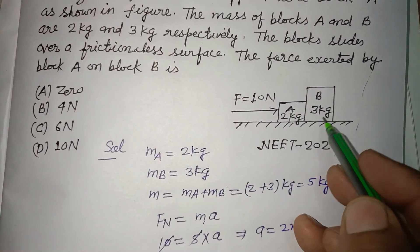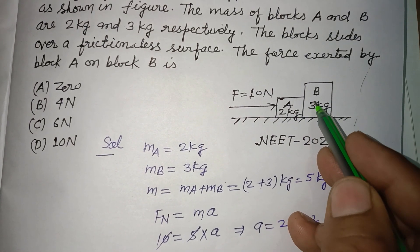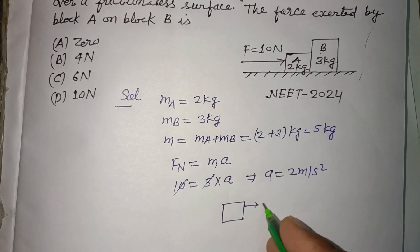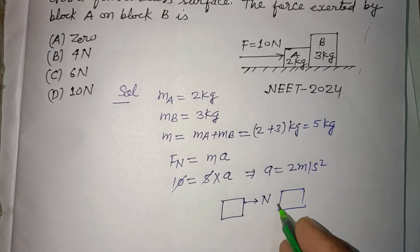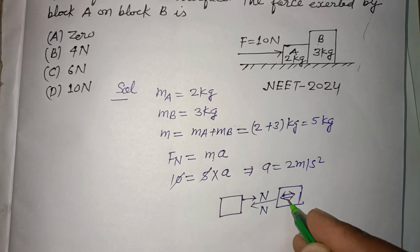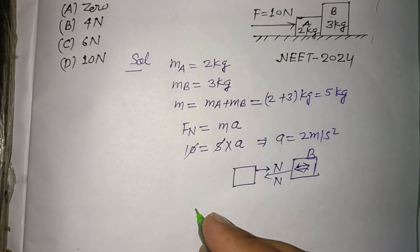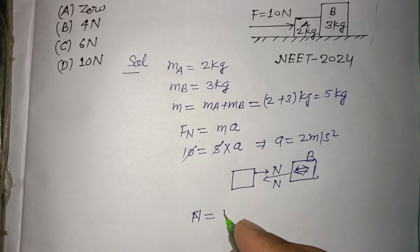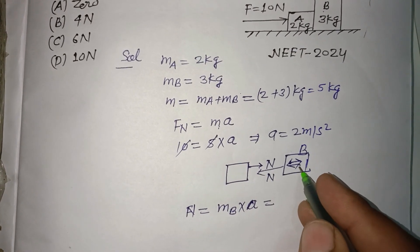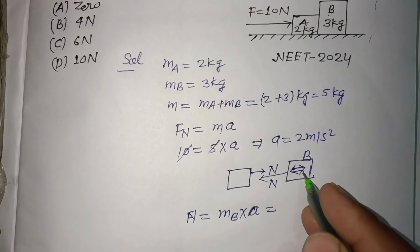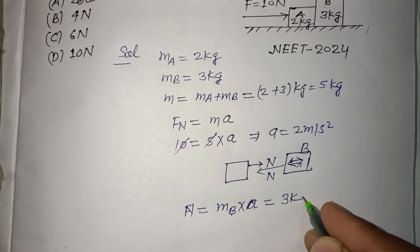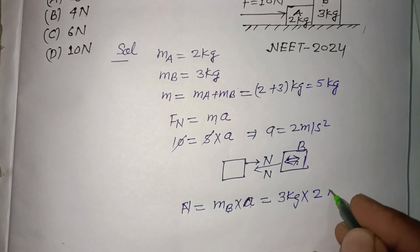Now, the force on block B due to block A — if this normal force applied is N, then the same N is experienced by block B. So N equals MB into A, where A is the acceleration. The force experienced by block B equals MB into A, where MB is 3 kg and A is 2 meters per second squared.